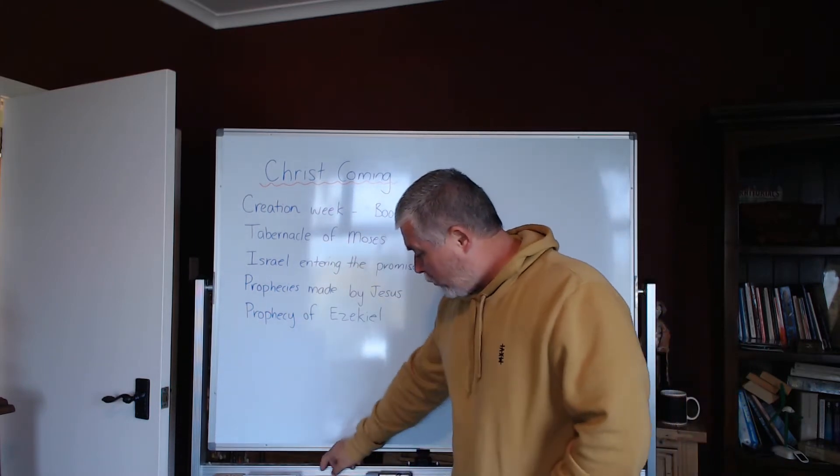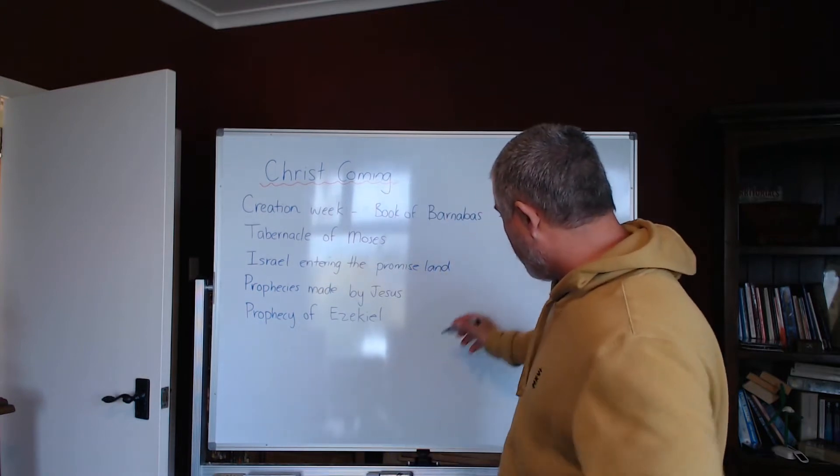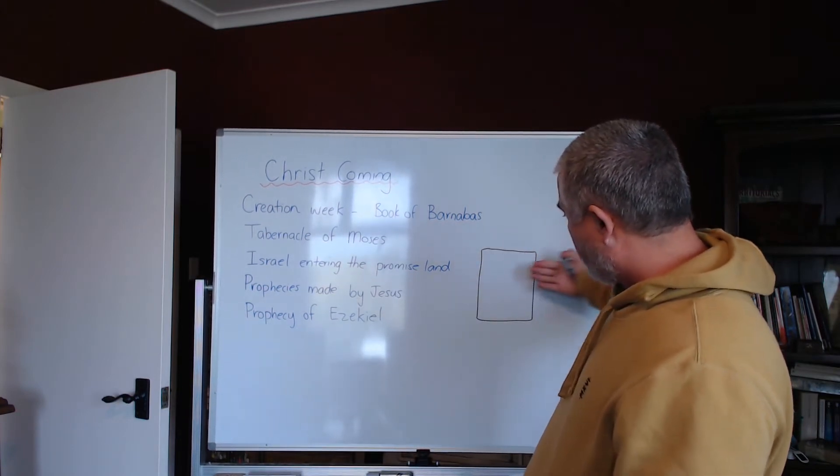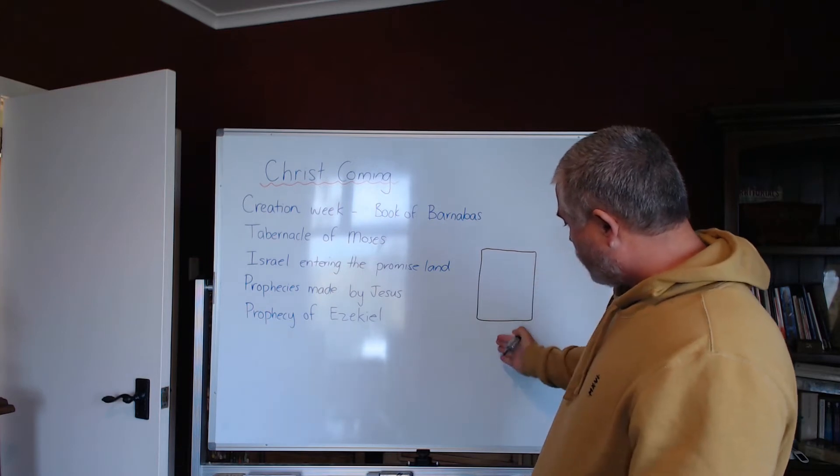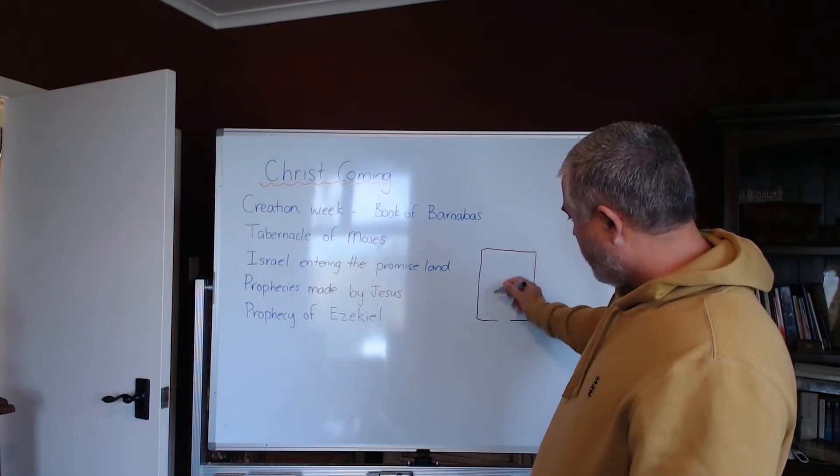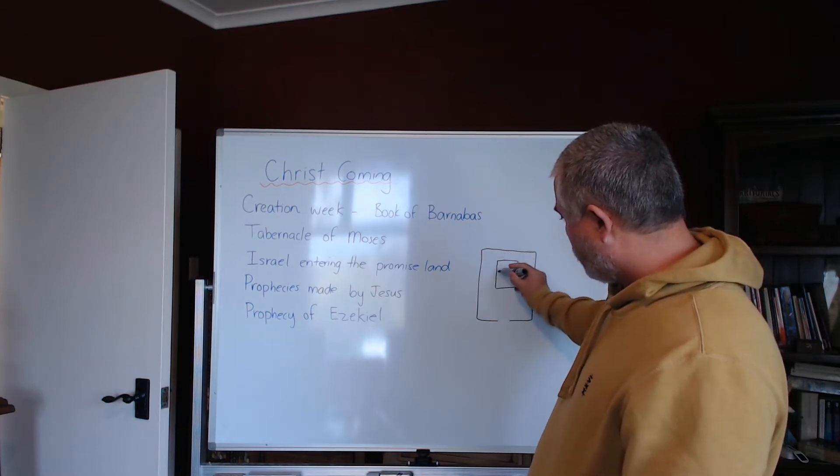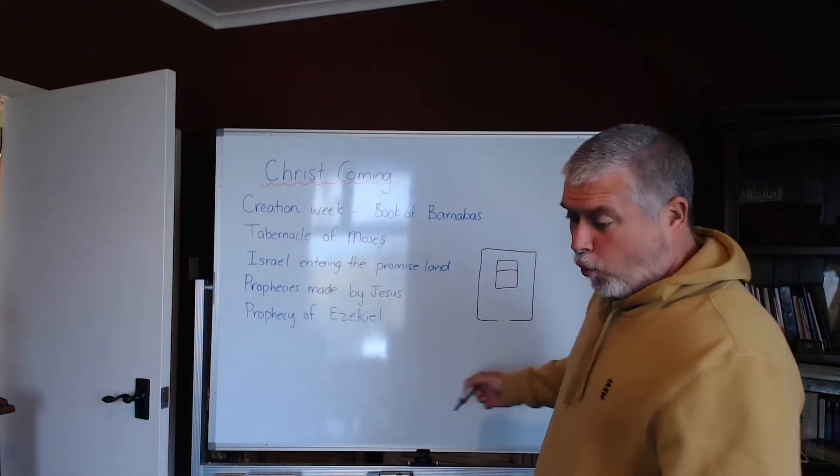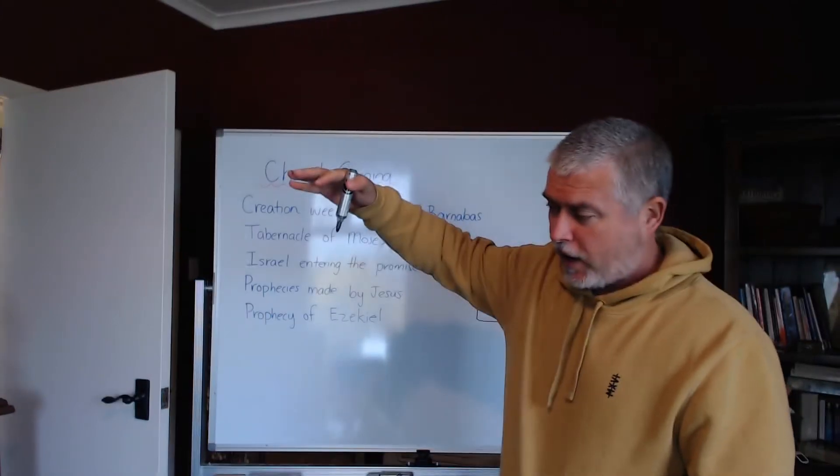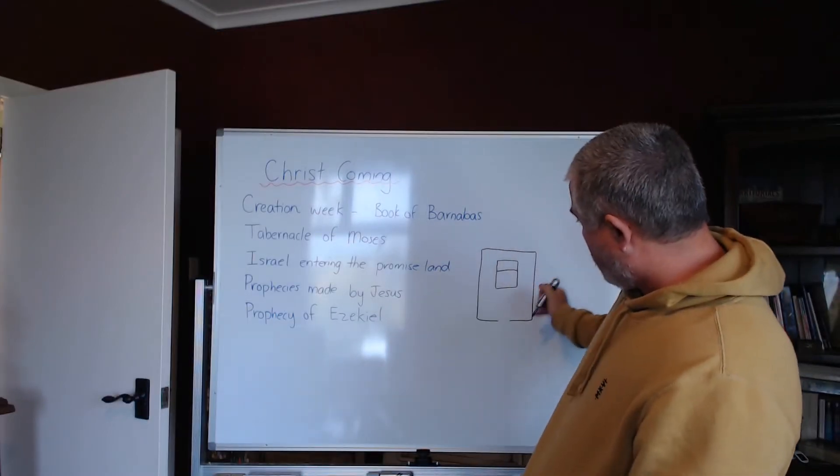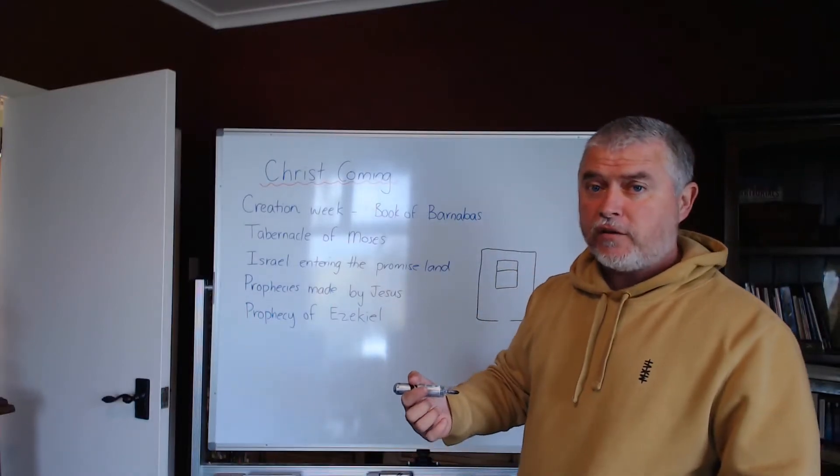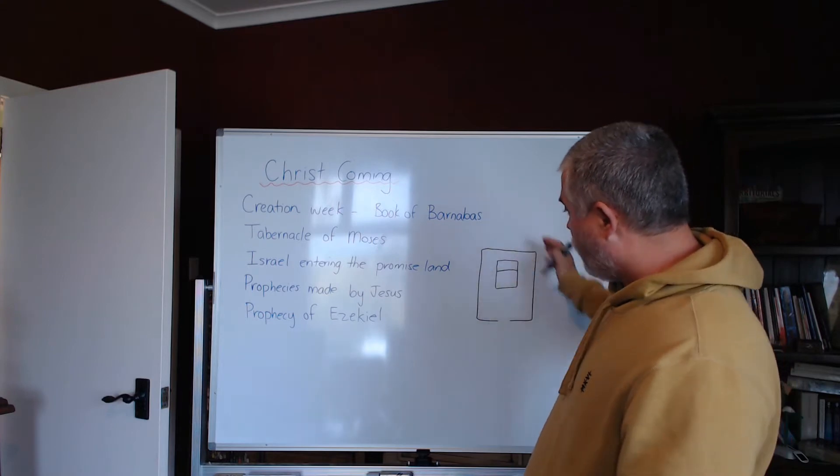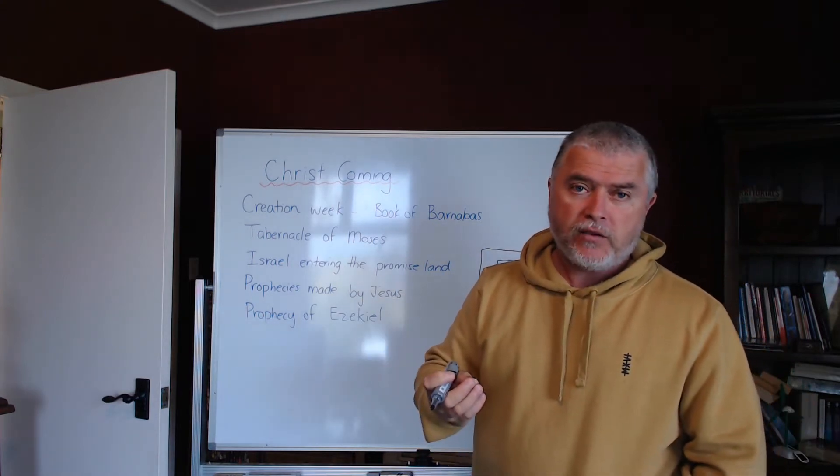When we look at the tabernacle of Moses, that could give us clues. So Moses made a tabernacle with three separate areas. There's an entrance here, and this was the outer courtyard. Then there was the tent, which was divided into two areas, Holy Place and Holy of Holies. If you could look at it as dispensations of ages, or you could look at it as prophetic, that tabernacle of Moses has three separate areas, and each of those areas is a dispensation of time.